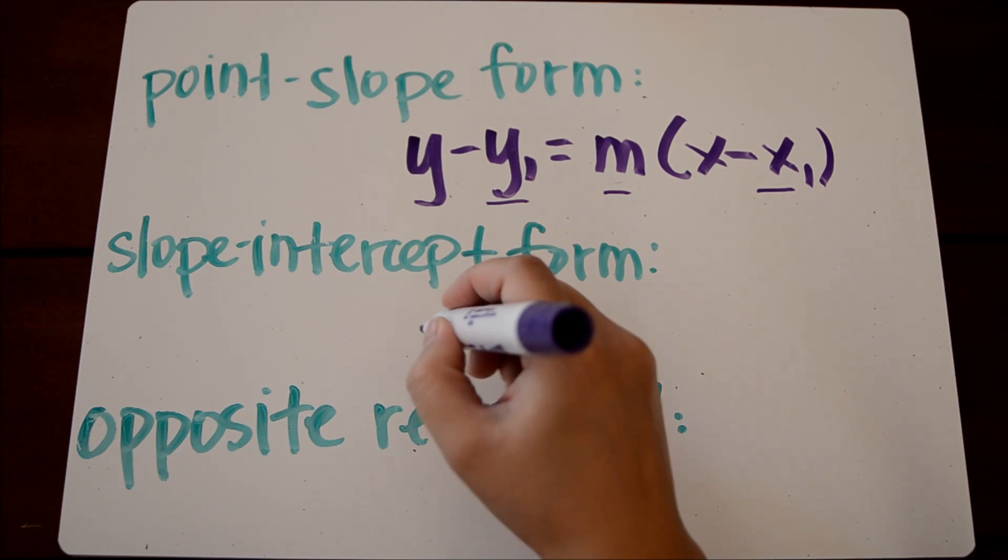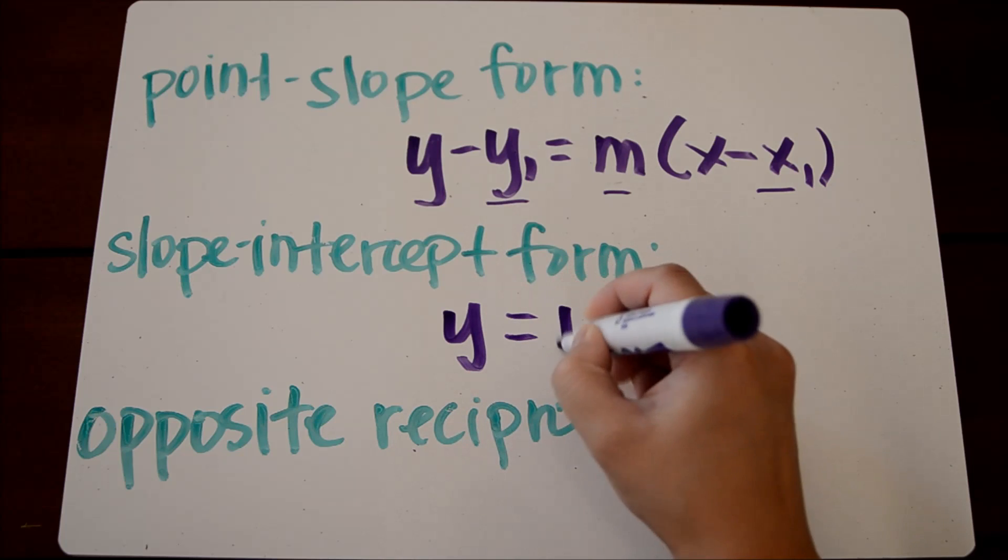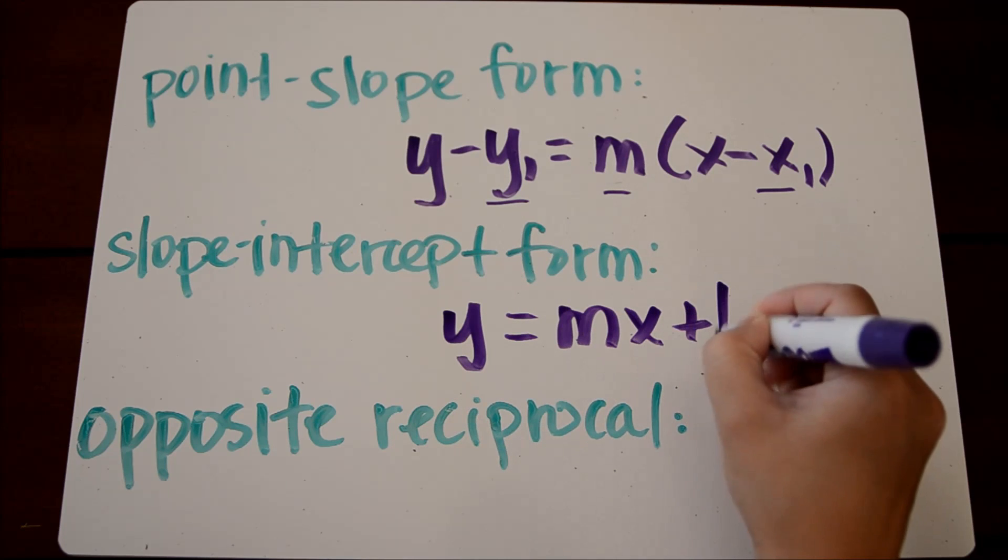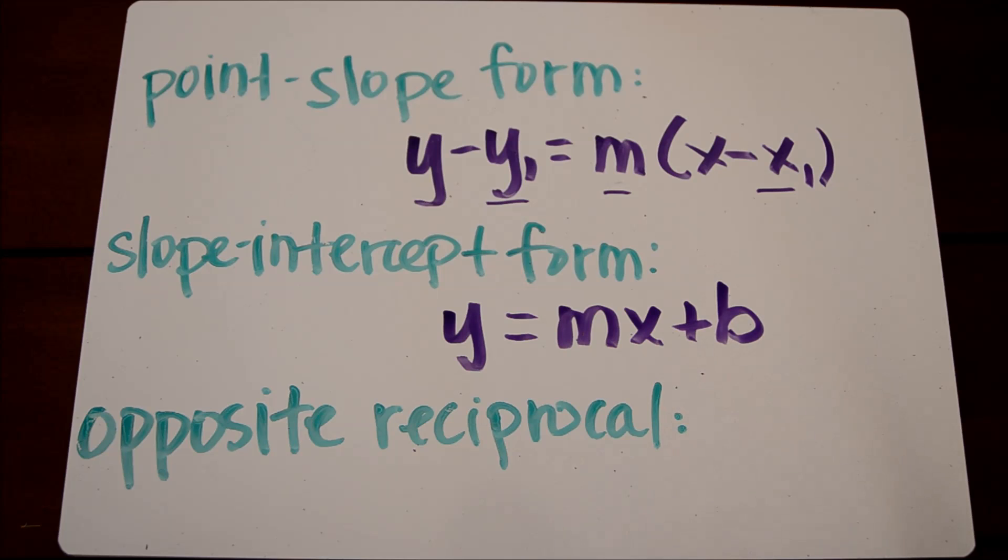Slope-intercept form is y equals mx plus b, where m is the slope and b is the y-intercept.